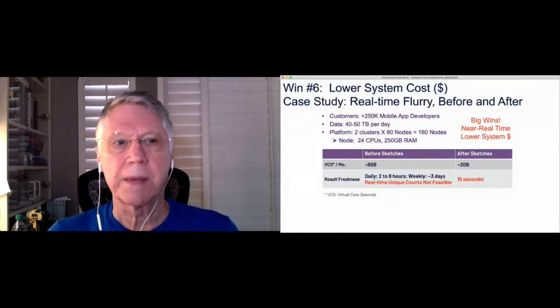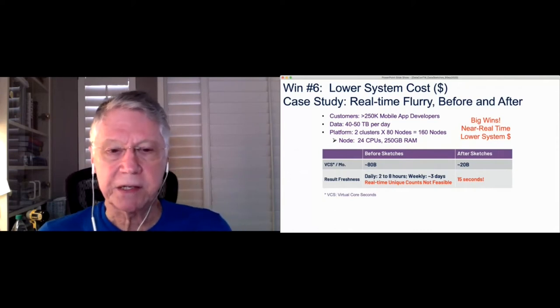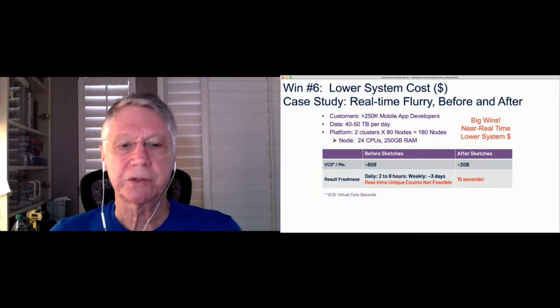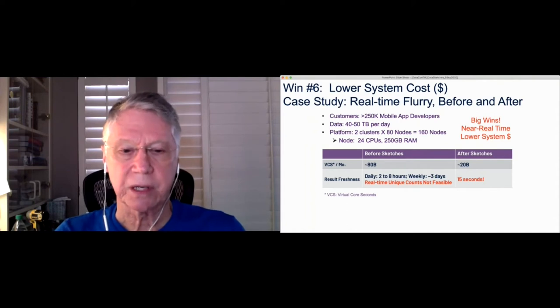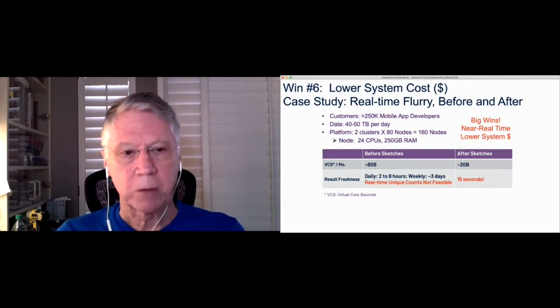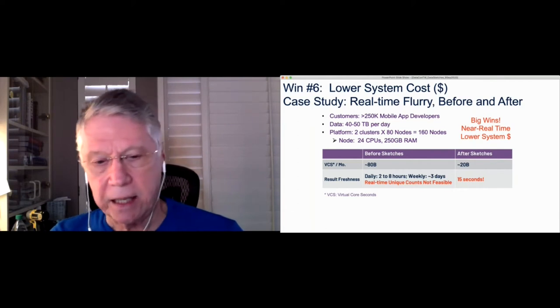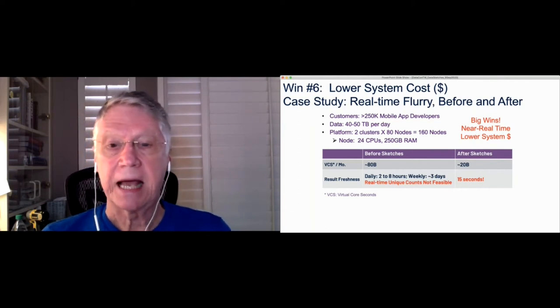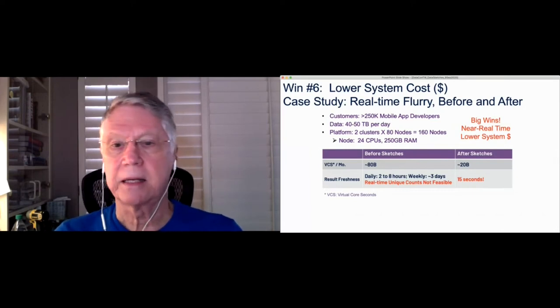The next major win was the lower system cost. So we had the chance, since we did this redesign in-house, we had the chance to analyze the overall system cost in terms of virtual core seconds. And so this is reflective of the actual hardware costs. And before sketches, it consumed about 80 billion virtual core seconds per month. And this is, by the way, for all the processing, not just the analysis that was used by sketching, but for everything. And after sketches, it reduced the entire system cost down to 20 billion virtual core seconds. That's about one-fourth the hardware costs and investment. So it's something to think about as an incentive.